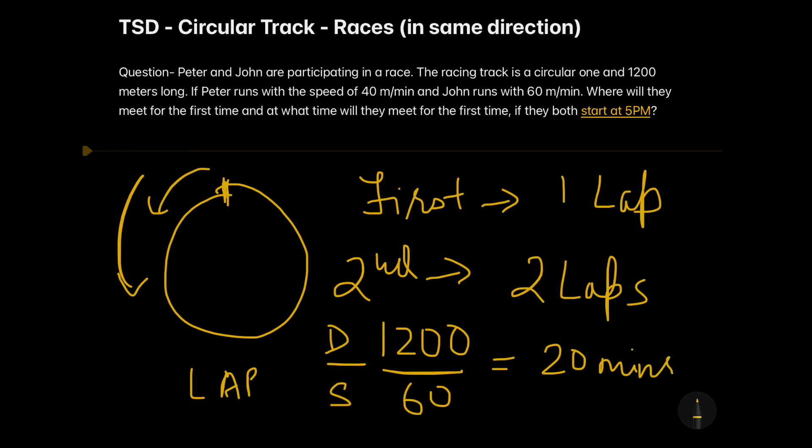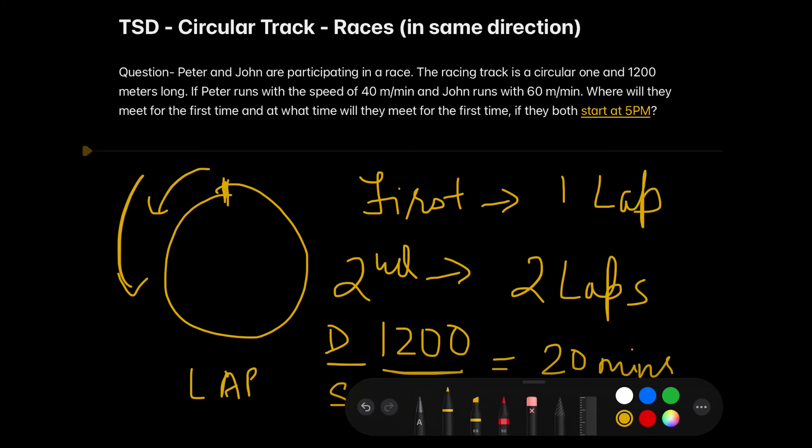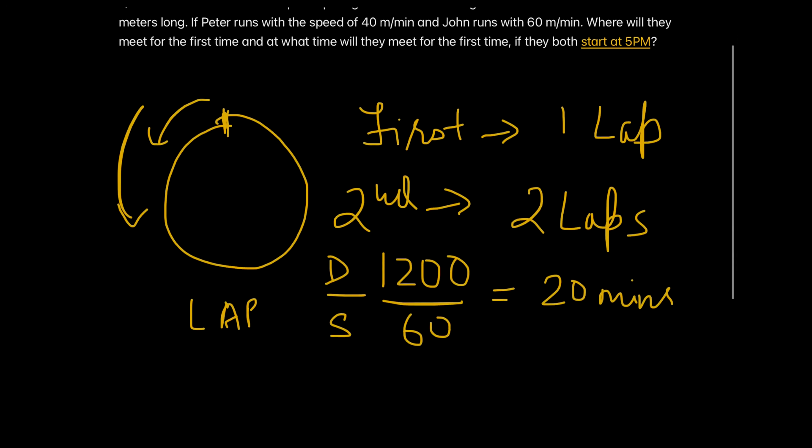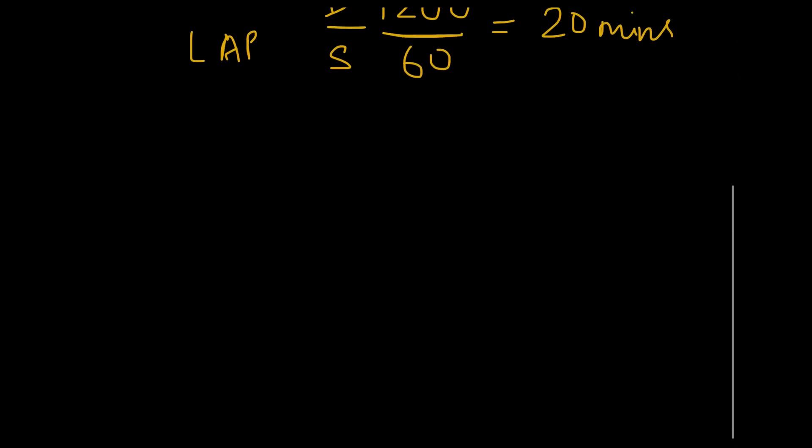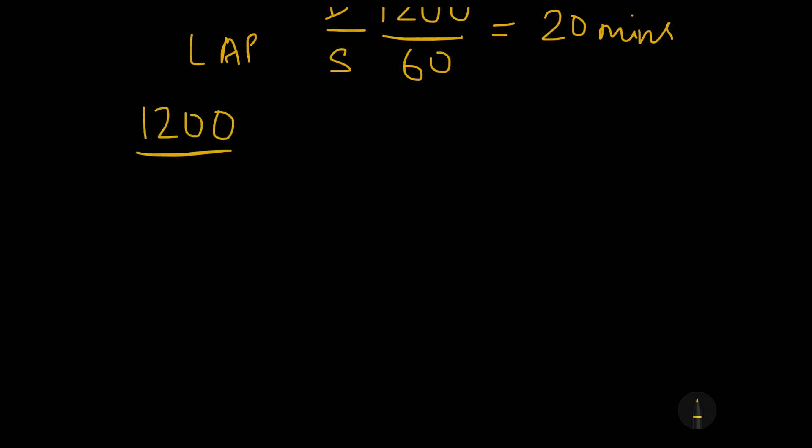So in 20 minutes John will be completing one lap. And if the same number is searched for in the case of Peter who is running at the speed of 40 meters per minute, then in that case we would be having the distance same as 1200 and the speed now would be 40. So if I divide it I would get 30 minutes. So that means Peter would be completing one lap in 30 minutes.